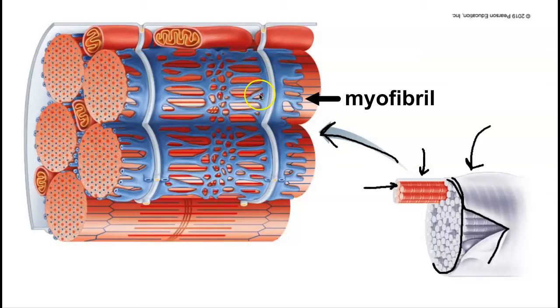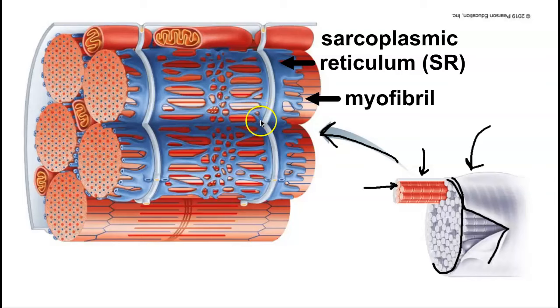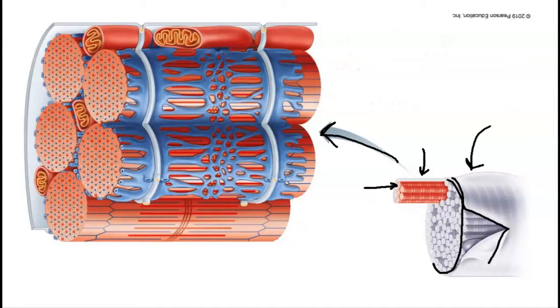The sarcoplasmic reticulum is a variation of the smooth endoplasmic reticulum. It surrounds each myofibril and stores calcium. While the skeletal muscle cell is at rest, the job of the sarcoplasmic reticulum, or the SR, is to use active transport to trap all of the calcium inside of the SR.